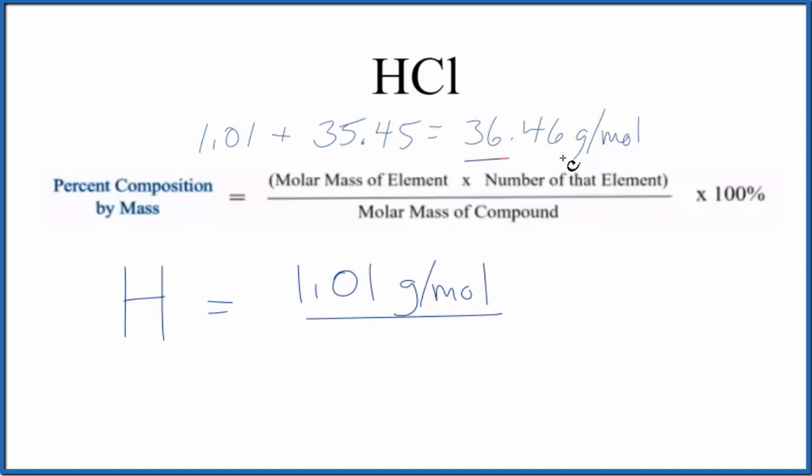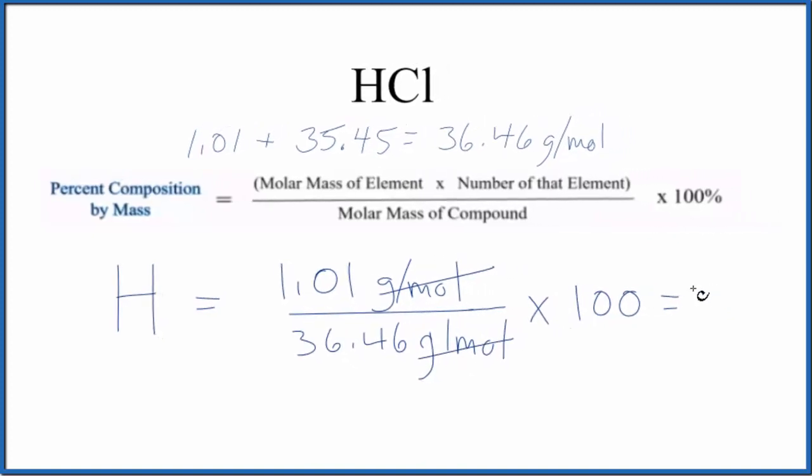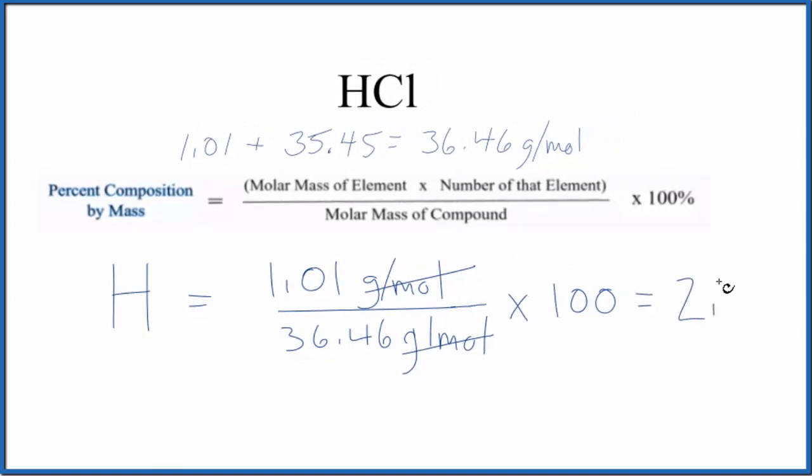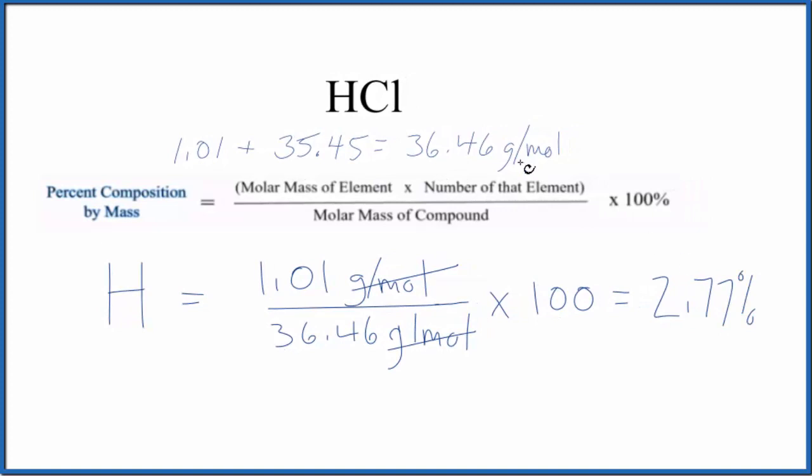We divide by the molar mass, this number here (36.46), and multiply by 100 to get a percent. The grams per mole cancels out, and we end up with 2.77% for the hydrogen in HCl. If you had a certain mass of HCl, the hydrogen would make up 2.77% of that mass.